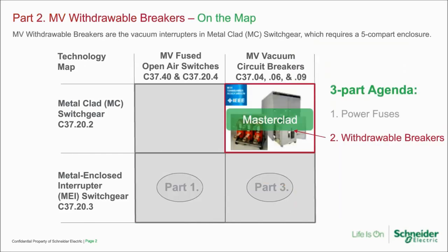Part 2 follows the same format: map, NEC, pros and cons, and limitations. Now we're moving into metal clad and a much higher degree of enclosure regulation — specifically down to the sheet metal in some cases. This category is where the breakers live, traditionally. There's a very specific requirement for compartmentalization: five compartments. For example, the breaker has its own compartment and the busing its own compartment. This is distinctly different from metal enclosed interrupters, which basically have no requirement for compartmentalization.